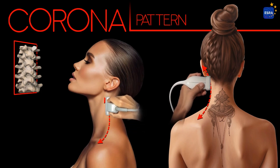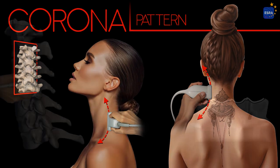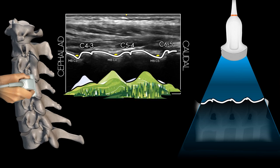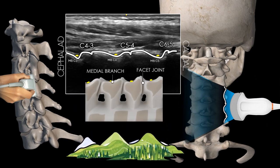The coronal scanning plane divides the body into anterior and posterior sections. In the cervical region, this plane is positioned over the articular pillar. The resulting image evokes a landscape of mountains and valleys: the mountains correspond to the prominent acoustic shadows produced by the facet joints, while the valleys represent the regions of the articular pillar traversed by the medial branches, which are responsible for providing sensory innervation to each joint.